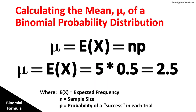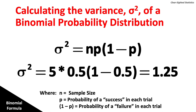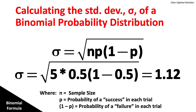The mean for heads in five flips is 2.5 heads, found by the sample size n = 5, times the probability of 0.5 or 50%. The variance for heads in five flips is 1.25, found by 5 × 0.5 × (1 − 0.5). The standard deviation for heads in five flips is 1.12, found by the square root of the variance.